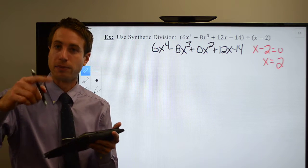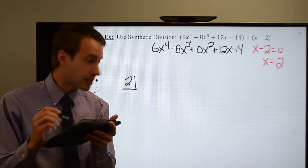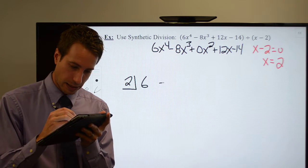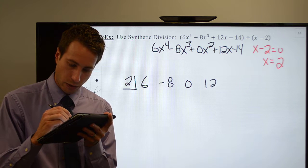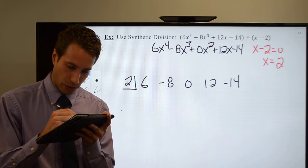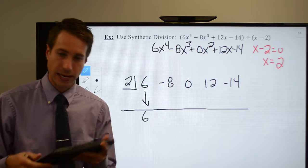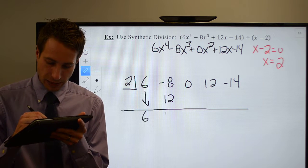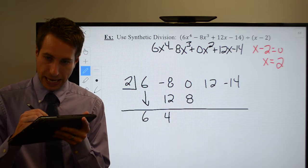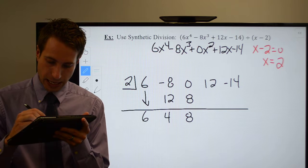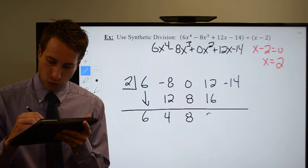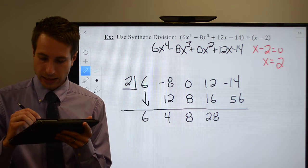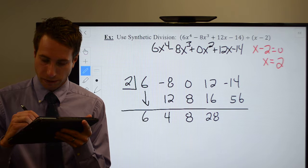We're all set to set up our synthetic division. So the 2 goes inside the box, and I pull out all of my coefficients: 6, negative 8, 0, 12, minus 14. We start by bringing down the 6. 6 times 2 is going to be 12. Add them up, that's going to leave me with a positive 4. It's going to give me 8, that's going to give me 8. That's going to be 16, which gives me 28. 2 times 28, 56. And negative 14 plus 56 should be 42. That's my remainder.